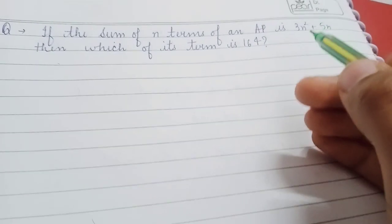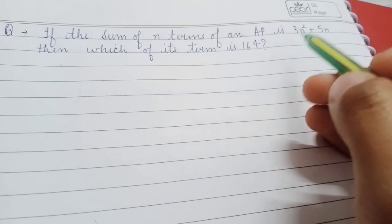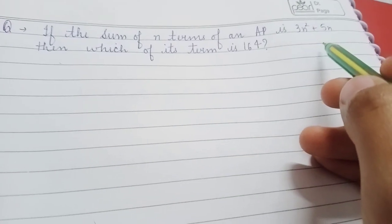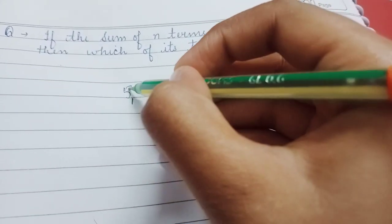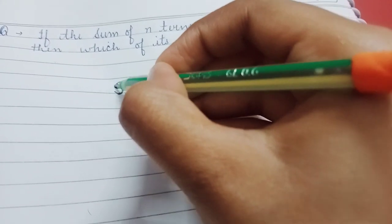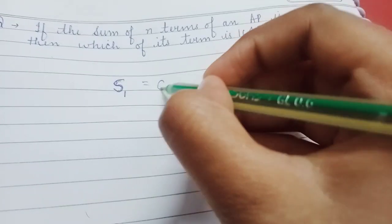So, we have that sum of n terms of an AP is 3n squared plus 5n. Sum of 1 terms of an AP, this is S₁, will be equal to the first term.